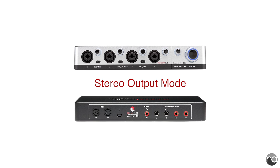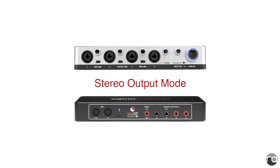When recording in stereo mode, your audio signal will default to outputs 1 and 2. When you connect a set of headphones to the headphone output, it will mute outputs 1 and 2. The level of your outputs and headphones can be controlled using the monitor knob.